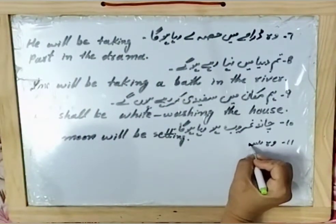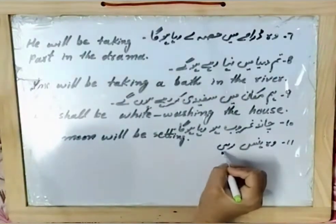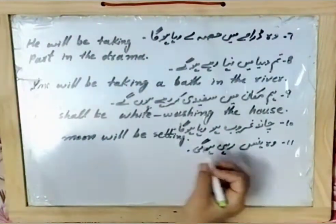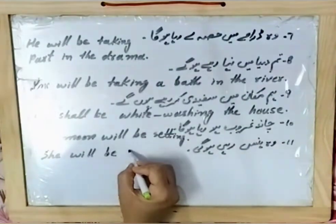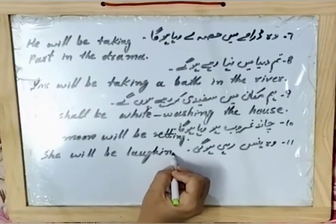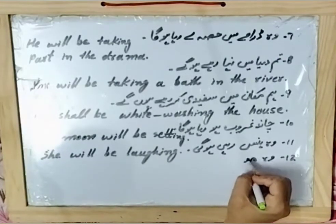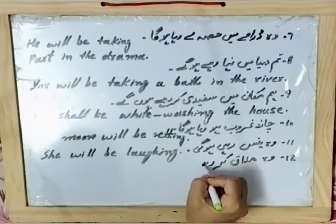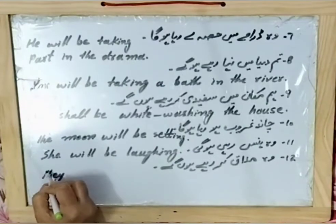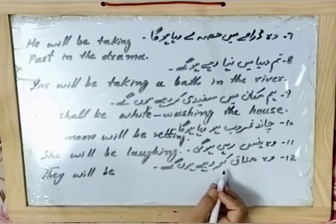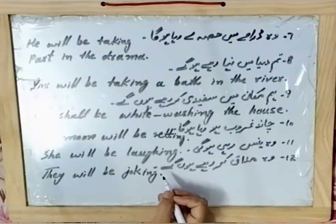Example number eleven: 'Woh hans rahi hogi' — she will be laughing. Subject 'woh' (female) = 'she.' Helping verb: 'will be.' 'Hansna' = 'laugh'; add '-ing' to get 'laughing.' So: she will be laughing. Example number twelve: 'Woh mazaaq kar rahe honge' — they will be joking. Subject 'woh' (plural) = 'they.' Helping verb: 'will be.' 'Mazaaq karna' = 'joking' — remove 'e,' add '-ing.' So: they will be joking.